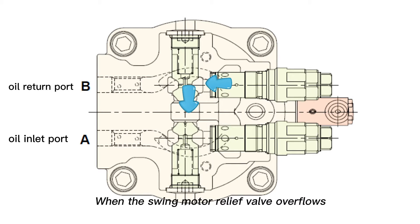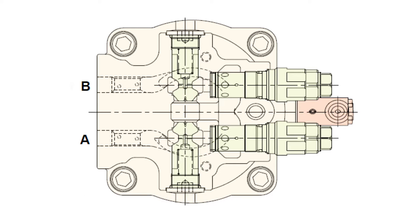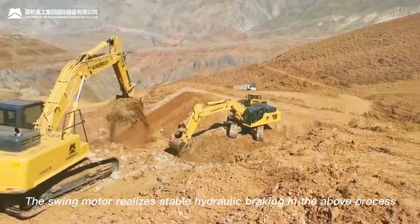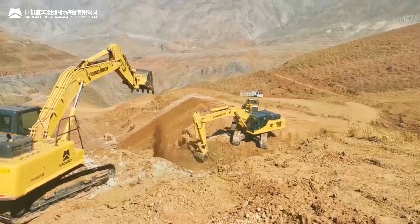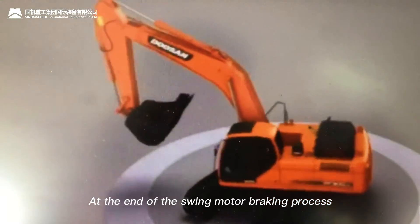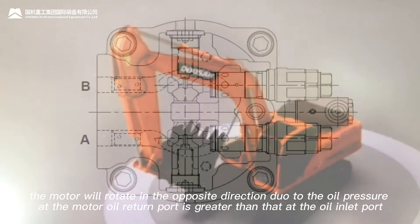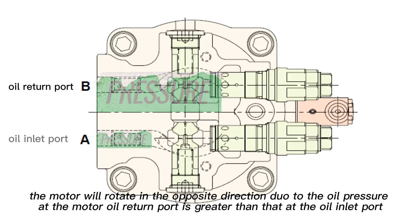When the swing motor relief valve overflows, the oil makeup check valve opens to supplement hydraulic oil for the motor oil inlet so as to prevent cavitation. The swing motor realizes stable hydraulic braking in the above process. At the end of the swing motor braking process, the motor may rotate in the opposite direction because the oil pressure at the motor oil return port is greater than that at the oil inlet port.